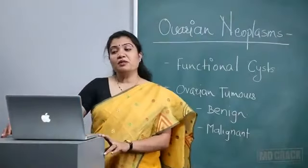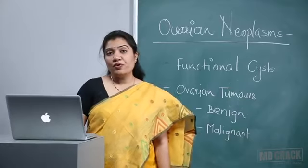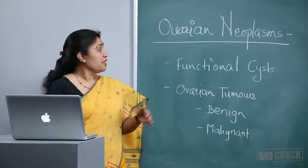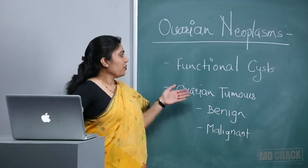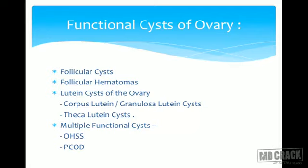Today we are going to see a big topic: ovarian neoplasms. We all know that ovary has many layers and many types of tumors. First, let's see what are the functional cysts of ovaries. They are retention cysts, and the most common are follicular cysts, follicular hematomas, lutein cysts of the ovary — that is corpus luteum or granulosa lutein cyst — theca lutein cysts. When multiple cysts are present, the conditions are like OHSS or PCOD.